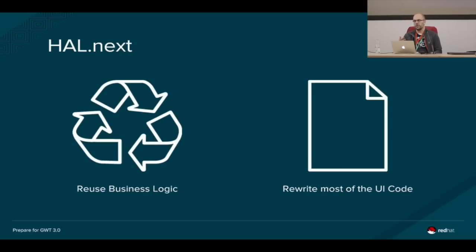We called it HAL Next — the next major version. We asked ourselves what we could do. We have a pretty big codebase — about 150,000 lines of code. We wanted to reuse as much code as possible. We already have some separation between the user interface and business logic — logic that talks to the application server, makes remote calls, and works with a model provided by the server. We decided it was a good opportunity to get rid of some old legacy code and rewrite most of the user interface.